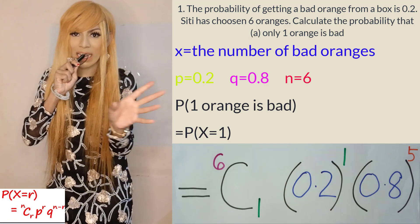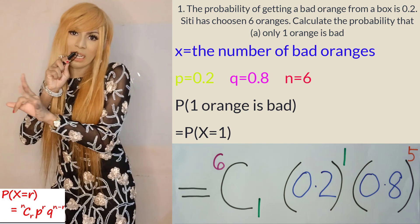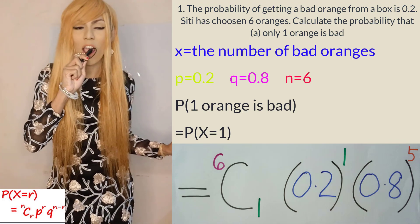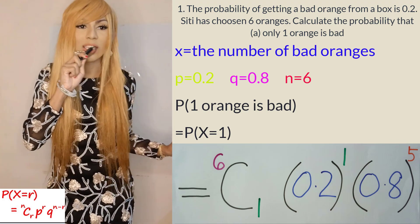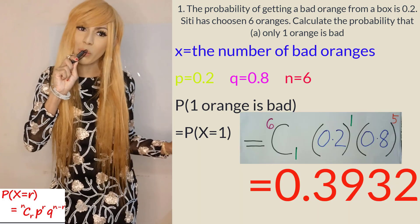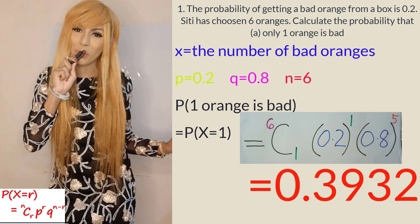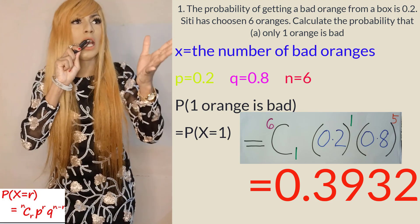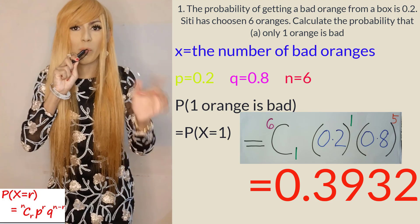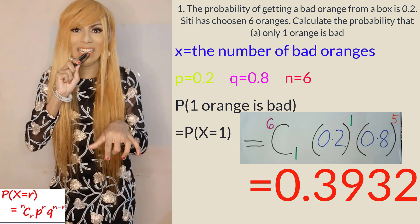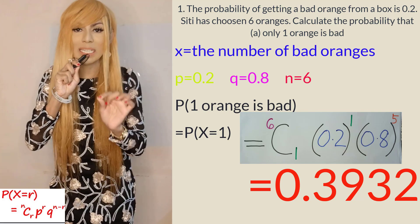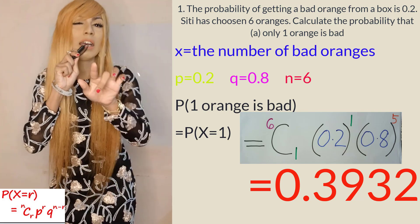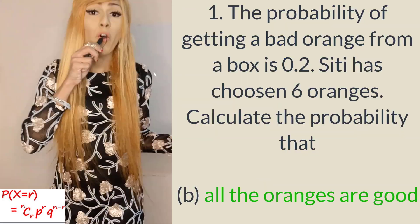Key that into your calculator and you will get the answer, which is 0.3932. By the way, if you are wondering how to press the combination symbol C, it is shift-divide on your calculator.